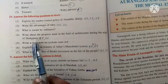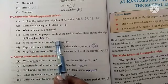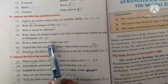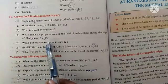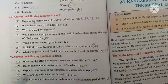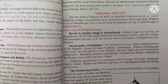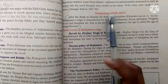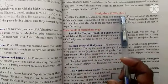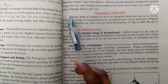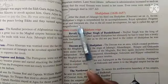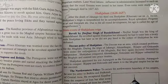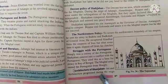Next question: Write about the progress made in the field of architecture during the reign of Shah Jahan. This answer is in page number 87 and 88. You will write about his reign duration 1628 to 1657, then write about the magnificence after his death, and then start with the architecture of Shah Jahan.